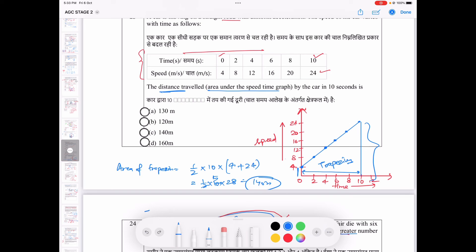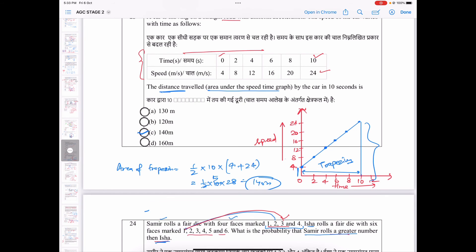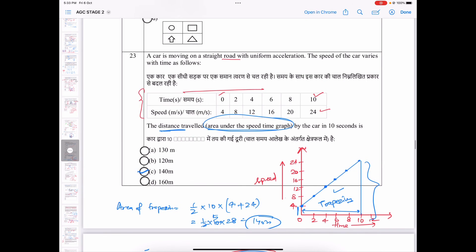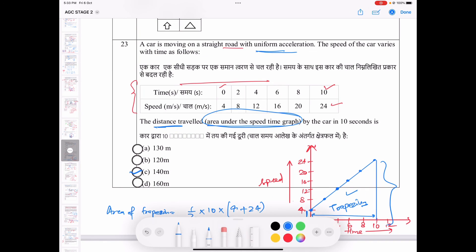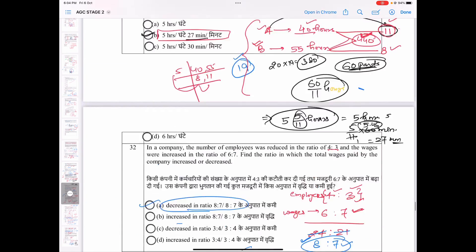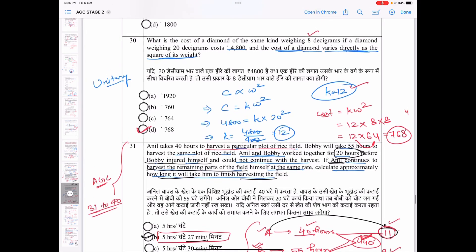Therefore, students, distance travelled by the car in 10 seconds is 140 meter. And because this line is very important, area under the speed time graph, you can use this concept of mathematics and this solution to find out. Otherwise, you can see uniform acceleration given here, you can use this concept of science. So students, that's all for the day. Stay tuned for more updates. Thank you.